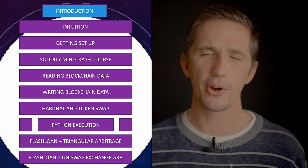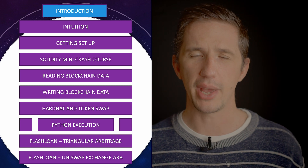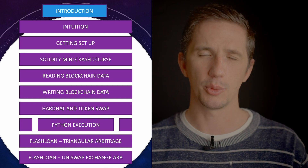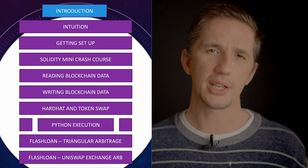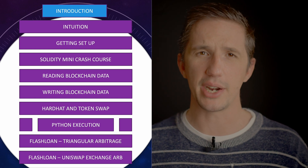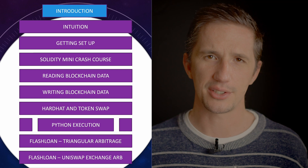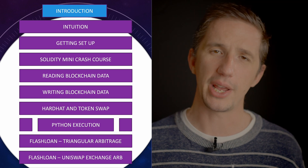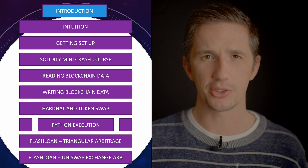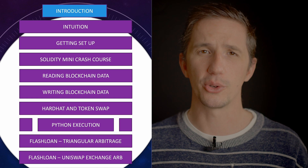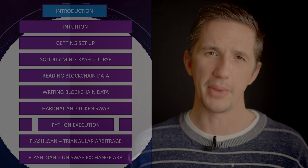We will be programming using Hardhat so that we can fork the mainnet — this will be explained further in the course — so that we can use pretend money risk-free to actually write and test our code. We then deploy our smart contract to the testnet, and I also show you how to deploy it to the mainnet.